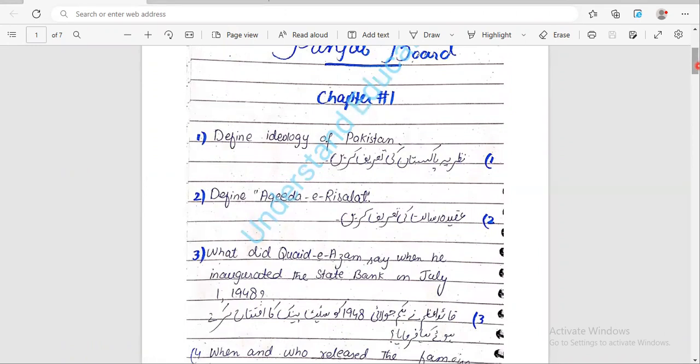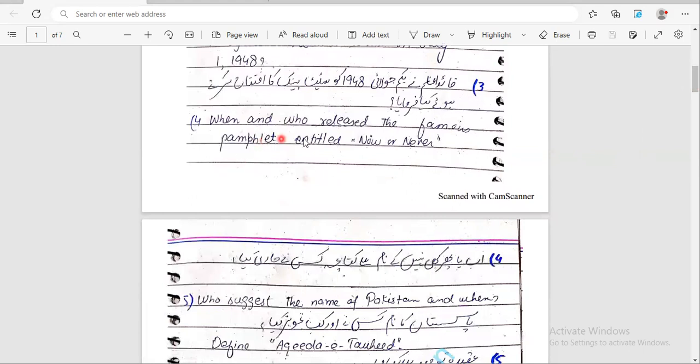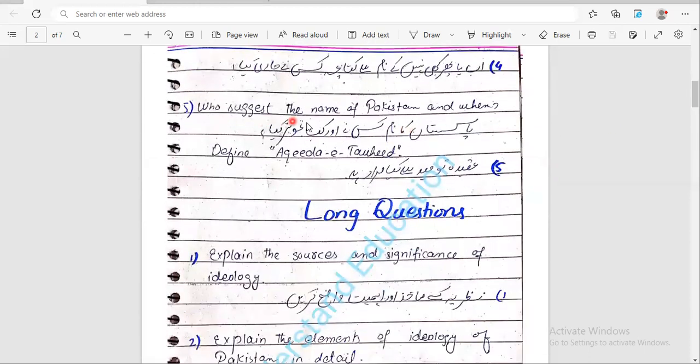Question number one: define ideology of Pakistan. Number two: define aqidah-e-risalat. Question number three: What did Quaid-e-Azam say when he inaugurated the State Bank on July 1, 1948? Most repeated question. Next: When and who released the famous pamphlet entitled Now or Never? Then number five: Who suggests the name of Pakistan and when?